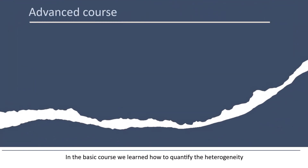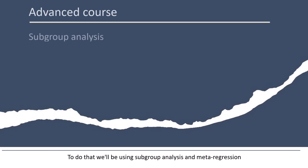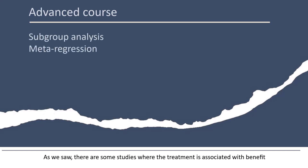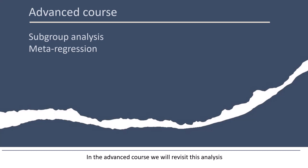In the basic course, we learned how to quantify the heterogeneity. In the advanced course, we'll learn how to explore the reasons for the heterogeneity. To do that, we'll be using subgroup analysis and metaregression. As we saw, there are some studies where the treatment is associated with benefit, and others where it's associated with harm. In the advanced course, we will revisit this analysis and try to understand what factors are associated with this difference.